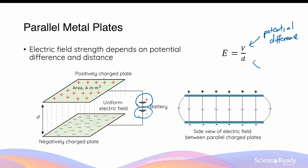The strength of this uniform field produced between the two charged plates can be calculated by taking the potential difference — also known as voltage V — and dividing by the distance between the two parallel plates. The electric field strength is directly proportional to the potential difference, and inversely proportional to the distance between the plates — if the plates are moved further apart, the electric field strength decreases.